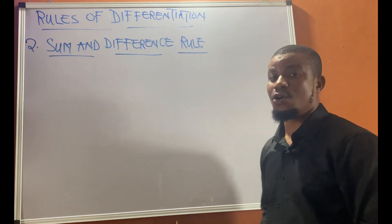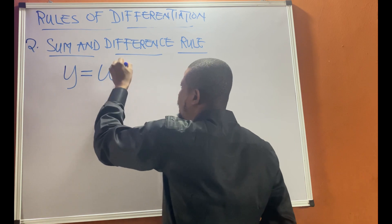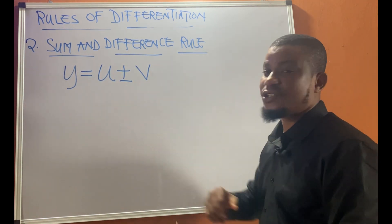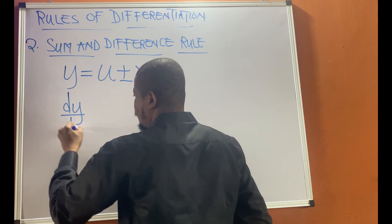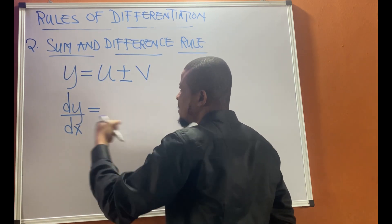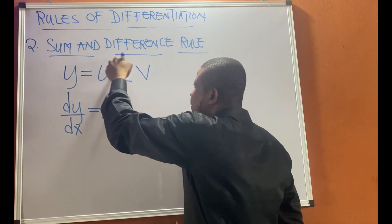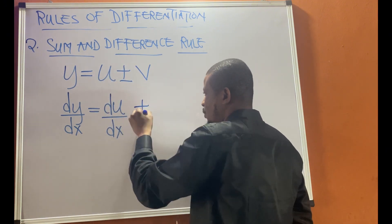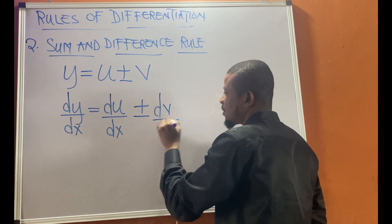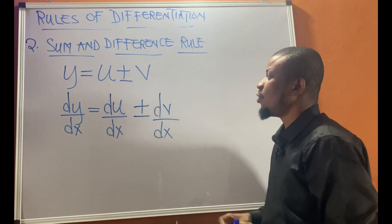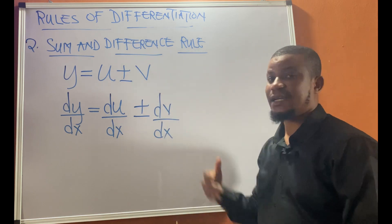The next rule we'll consider is the sum and difference rule. If you are given a function y equal to u plus or minus v, where u is a function of x and v is a function of x, then dy/dx will be: differentiate u with respect to x, maintain the sign — if it's plus, write plus; if it's minus, write minus — then differentiate v with respect to x. That is the sum and difference rule. Always maintain the sign after differentiating each term.